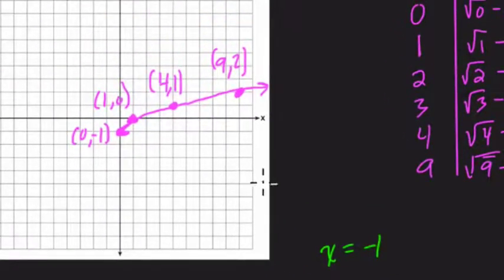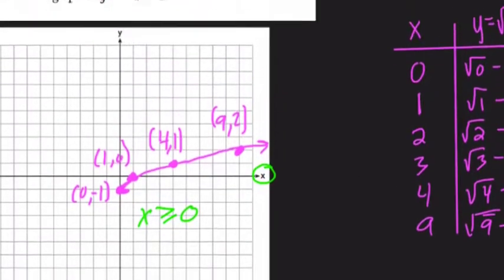Here, we're considering the domain to make our graph. The domain is our x values. This graph exists when x is greater than or equal to zero. It exists on this graph when x is greater than or equal to zero, or the domain is greater than or equal to zero. It does not exist below it.